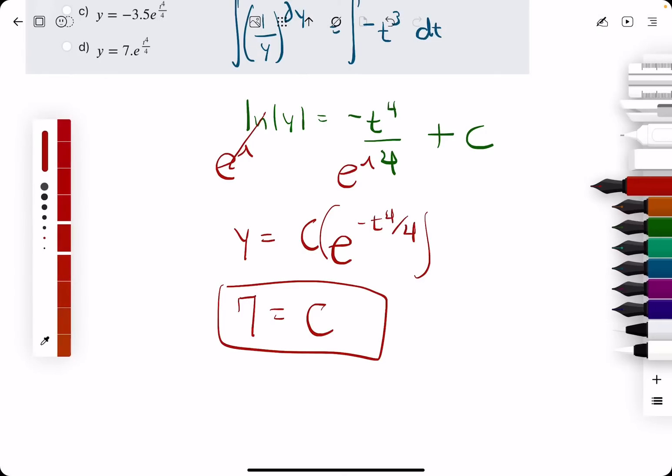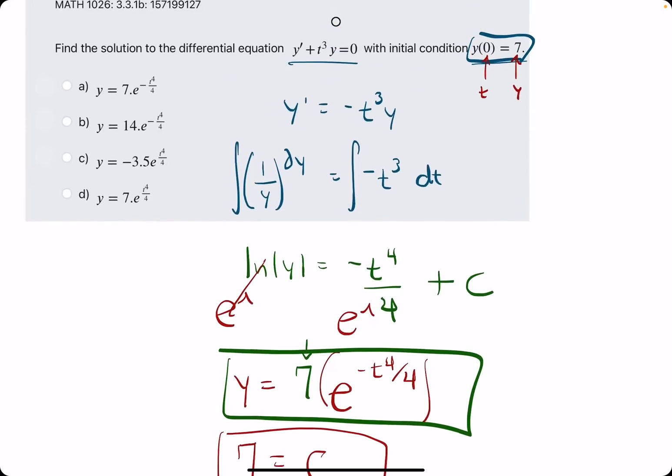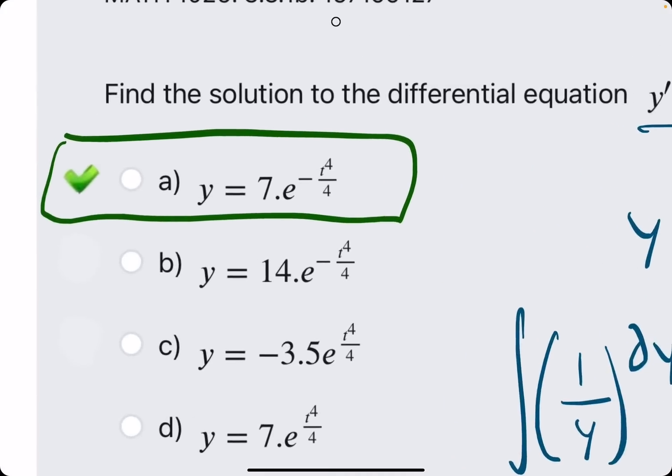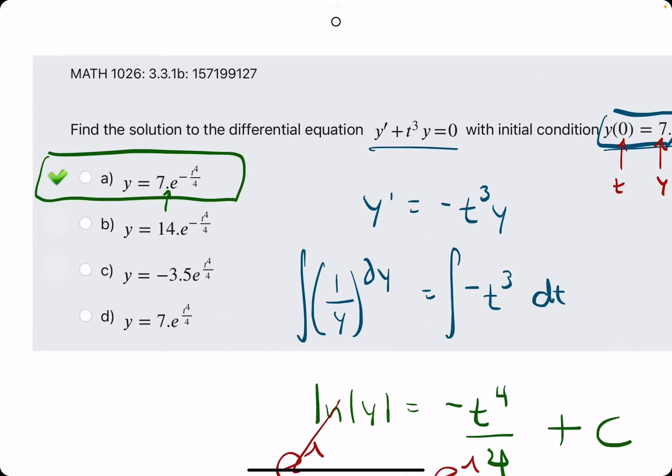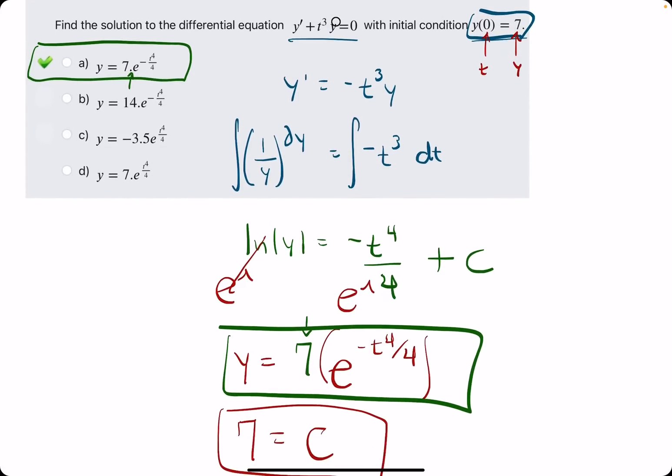So if we had our general solution right here, we just plug in seven where we had the c originally. So we're looking for seven e to the negative t to the fourth over four. It looks like option a, the decimal is a little weird. They often do that with a lot of the random problems they have. It just means seven. You can sort of ignore it. That's pretty much it.